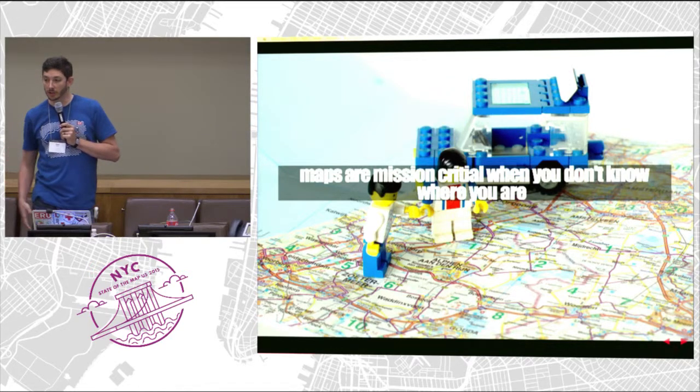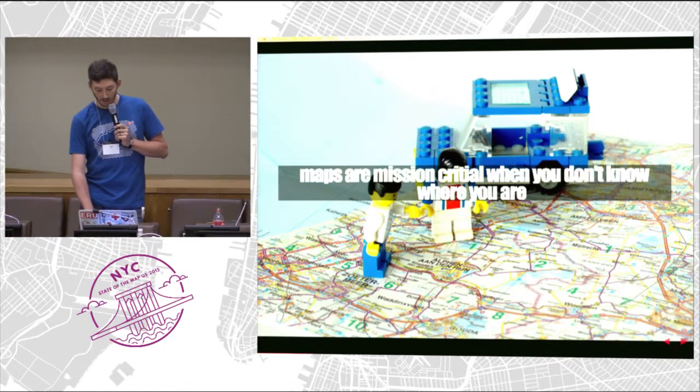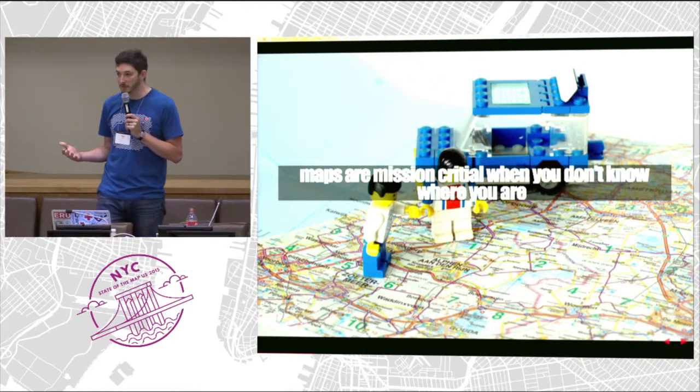As the American Red Cross working internationally, we often don't know where we are, where the people we're working with are, or how to get there. OpenStreetMap has become the de facto database and exchange language for humanitarians about location. When a big disaster happens, we go look in OpenStreetMap. When we're planning water points in rural Tanzania, we go look in OpenStreetMap. It's the way that large NGOs — the UN, Red Cross, MSF — are all sharing data now.